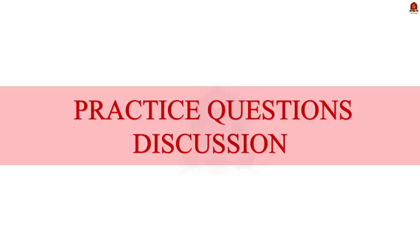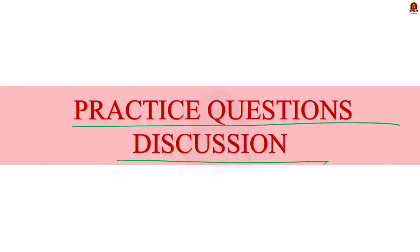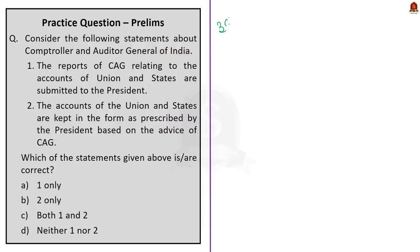Now let's move on to the preliminary practice question discussion. Today we have three questions — two will be discussed and one will be a quiz question. The first question is regarding the Comptroller and Auditor General of India. Two statements are given, so we must go through both statements before answering.